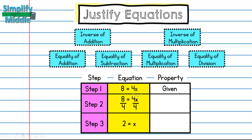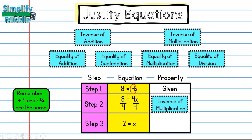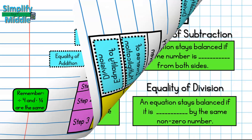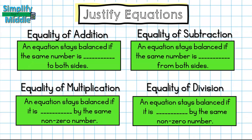For the final problem, 8 = 4x is given. X is being multiplied by 4. A quick reminder: dividing by 4 is the same as multiplying by 1/4, its reciprocal. Since there is no inverse property of division, I use the inverse property of multiplication — multiplying 4 by its reciprocal 1/4, which equals 1. I divide both sides by 4, so that is the equality property of division.